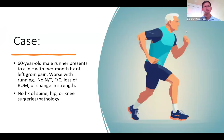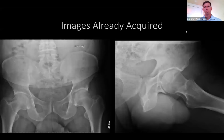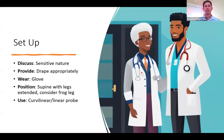A few months ago, a 60-year-old male runner presented to my clinic with a two-month history of left groin pain, worse with running. He had no numbness or tingling, no fevers or chills, no loss of range of motion, no changes in strength, and no history of spine, hip, or knee surgeries or pathology. He had already visited his primary care physician and x-rays were obtained. On review, there was no significant osteoarthritis. Given his overall normal workup, we decided to pursue an anterior hip ultrasound.